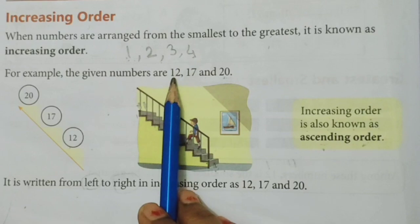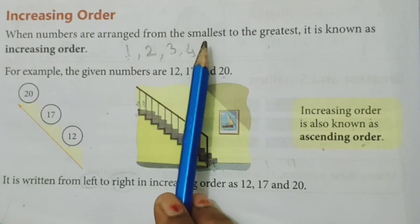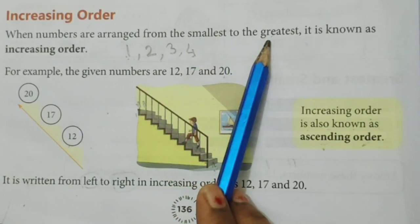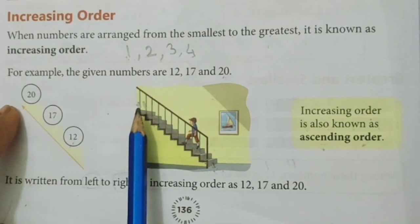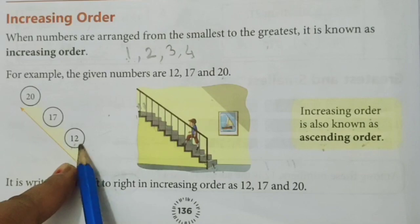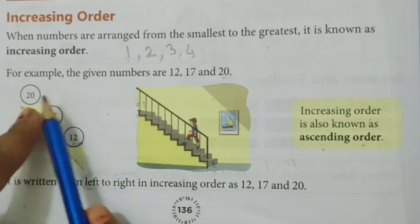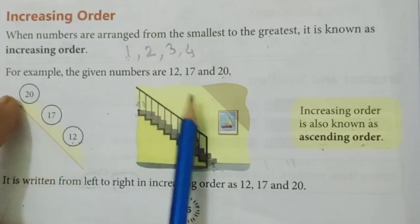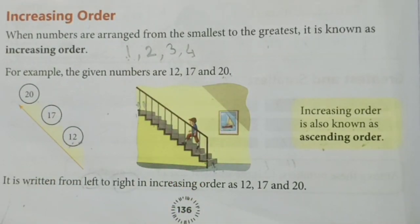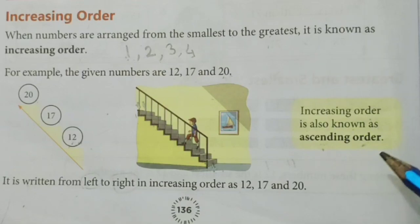Some numbers are given here: twelve, seventeen and twenty. As per our definition, what is meant by increasing order? Smaller number to the greater number. The small number here is twelve, so write twelve first. After that seventeen, and last one twenty. That means the direction is increasing. It is written from left to right in the increasing order.